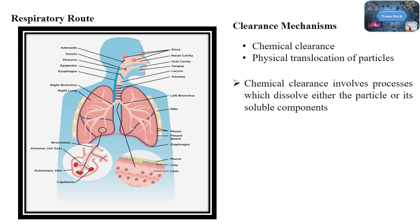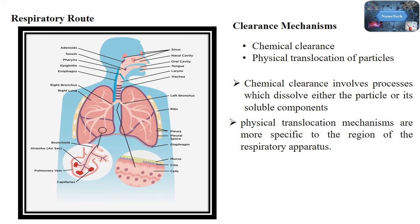The physical translocation mechanisms are more specific than chemical clearance. Two main clearance mechanisms are there: one is mucociliary escalator. This happens in the nasal mucous membrane and the tracheobronchial region, where ciliated epithelial cells and mucus-secreting cells are responsible for mucociliary escalator function.